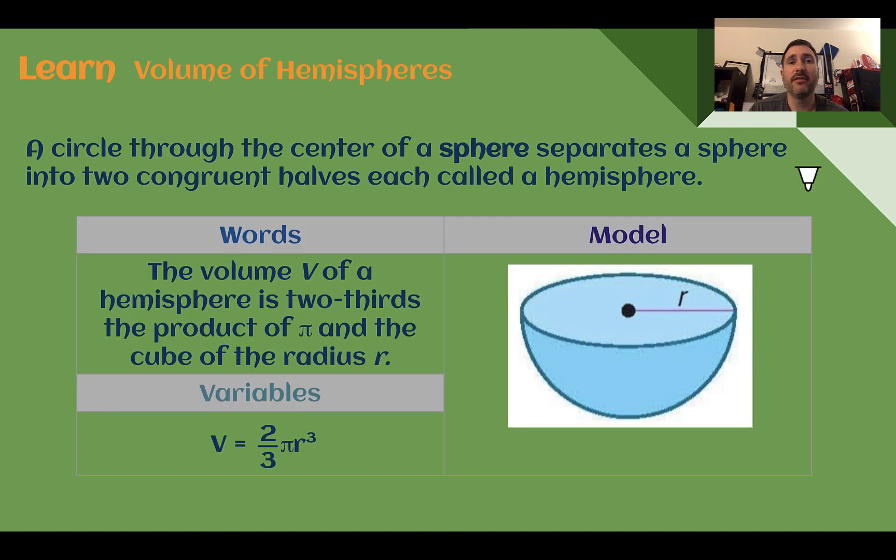Let's learn volume of hemispheres. A circle through the center of a sphere separates a sphere into two congruent halves, each called a hemisphere. So a hemisphere is half of a sphere. To find the volume of a hemisphere, we can take a whole sphere and divide it by 2. Or you could just say it's 2 thirds pi r cubed instead of 4 thirds. But if that's something that you don't want to have to remember, remember a sphere and then divide it by 2 to get a hemisphere.